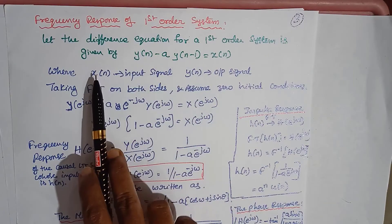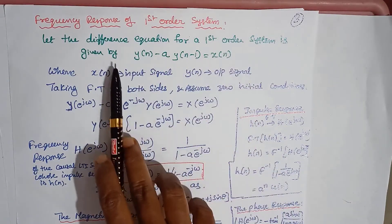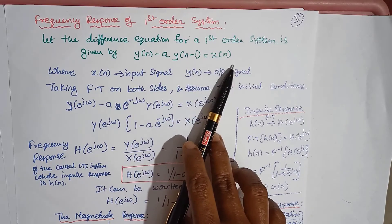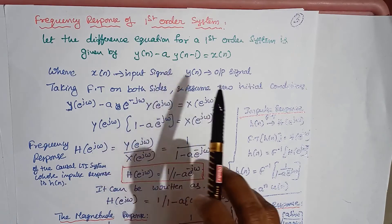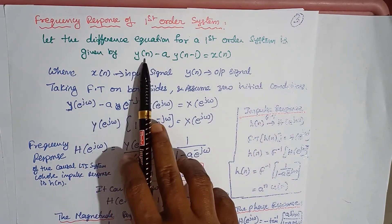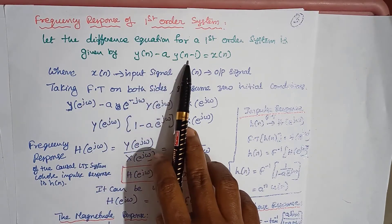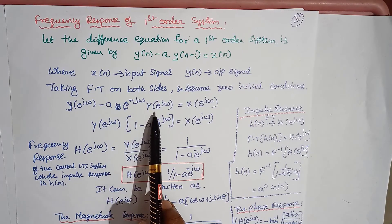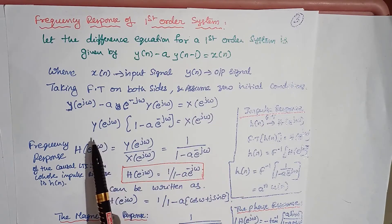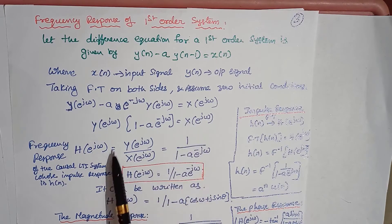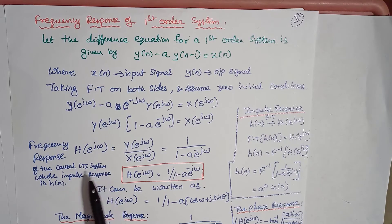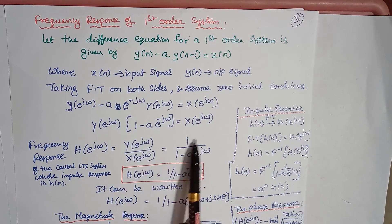Let us see the frequency response of the first order system. Consider the difference equation: Y of n minus A times Y of n minus 1 equal to X of n, where X of n is the input and Y of n is the output. Applying Fourier transform on both sides at zero initial conditions, we get Y of e power j omega minus A times e power minus j omega times Y of e power j omega equal to X of e power j omega. Taking Y of e power j omega common: Y of e power j omega times (1 minus A times e power minus j omega) equals X of e power j omega. From this, the frequency response H of e power j omega equals Y of e power j omega divided by X of e power j omega, which equals 1 divided by (1 minus A times e power minus j omega). This is the transfer function of the system.